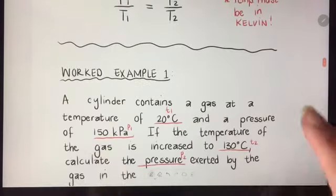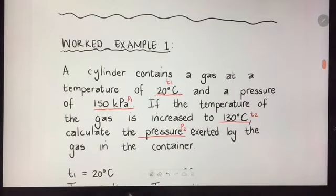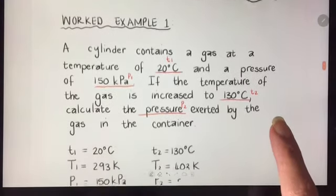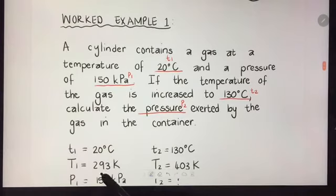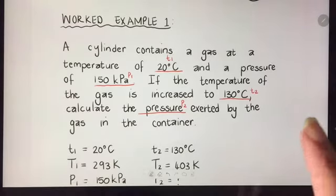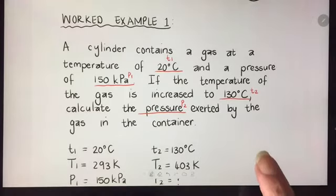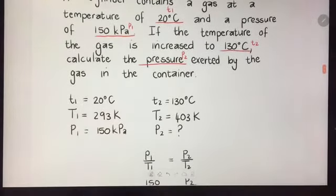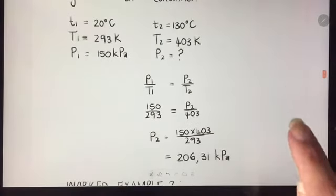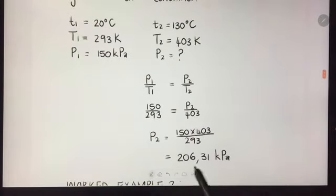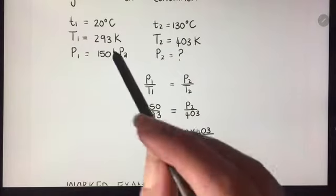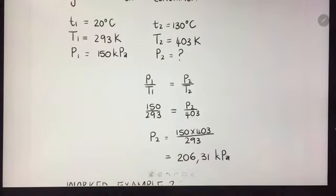Some examples of calculations. A cylinder contains a gas at a temperature of 20 degrees Celsius — I've immediately worked out the Kelvin temperature. The pressure is 150 kilopascals. If the temperature is increased to 130 degrees Celsius — I've worked out the Kelvin temperature — what is the pressure going to be? I've written down the formula, substituted the values, done the calculation, and got the answer. To know the unit, I check the other pressure: it was kilopascals, so the answer will also be in kilopascals.